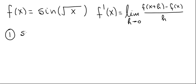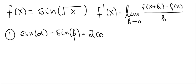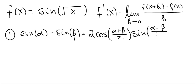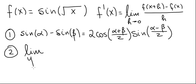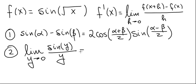The first result is a trig identity which says that sine of alpha minus sine of beta equals twice cosine of (alpha plus beta)/2 times sine of (alpha minus beta)/2. The second result is that the limit as y approaches zero of sine(y) over y equals 1.